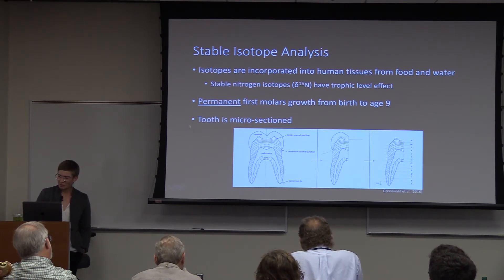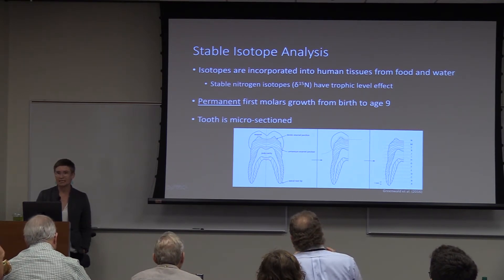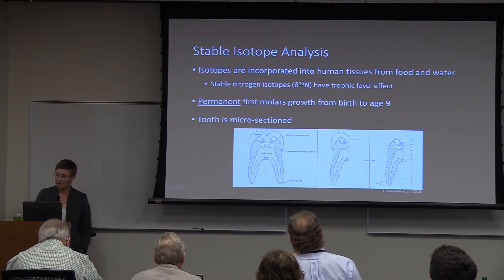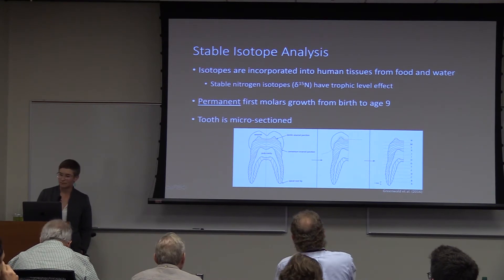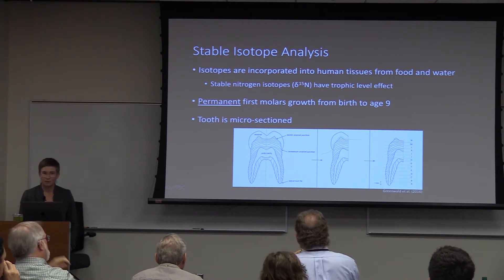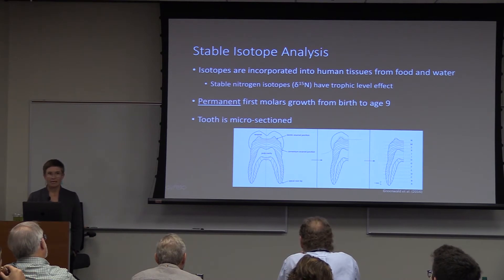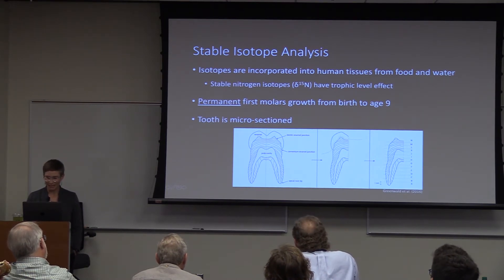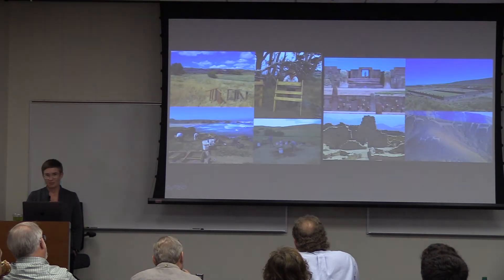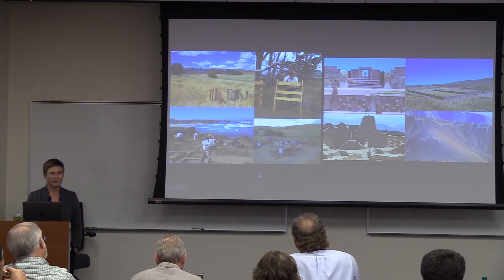Permanent first molars provide an ideal window into early life since they grow from birth to age nine and accrete dentin in layers, much like tree rings, that can be tied directly to an individual's age. I cross-section the tooth and mechanically and chemically remove the inorganic component, cut very thin sections, solubilize the collagen — extracting only the protein component — then run it through a mass spectrometer.